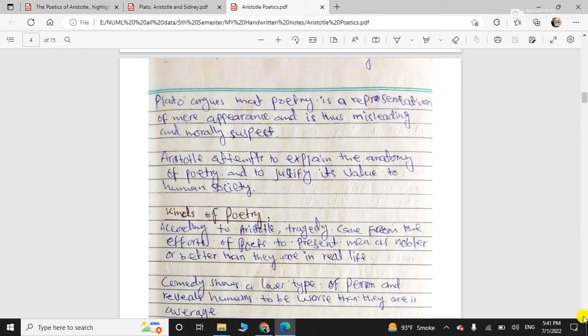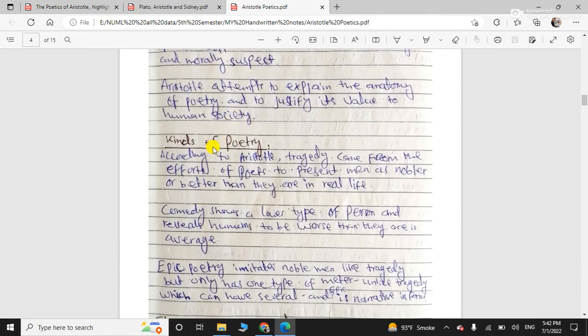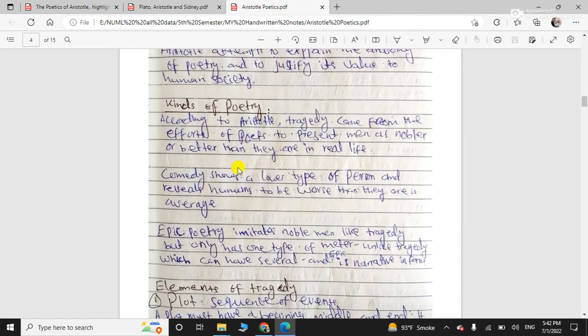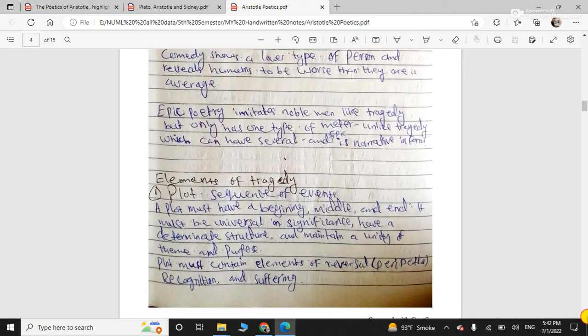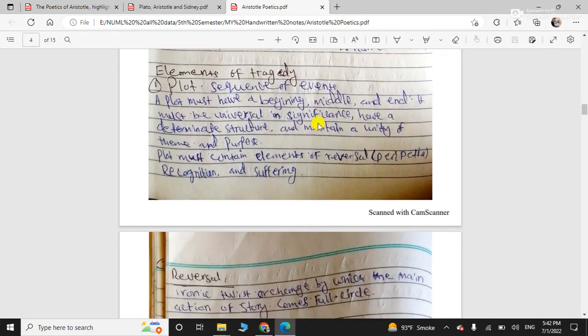And he explains the anatomy of poetry and justify its value and worth to human society. Then kinds of poetry. According to Aristotle, tragedy came from the efforts of the poet to present men as nobler or better than they are in real life. And then comedy, he represented comedy as a lower rank to tragedy, whereas comedy shows a lower type of a person.